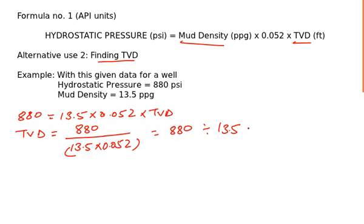880 divided by 13.5 will give you something 65.18. Then dividing it by 0.052 will give you 1253.56. It will be TVD in feet.